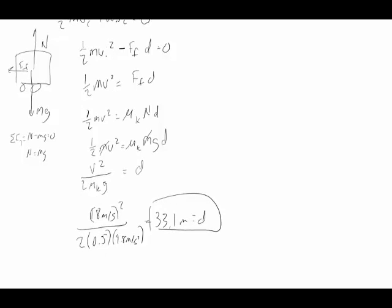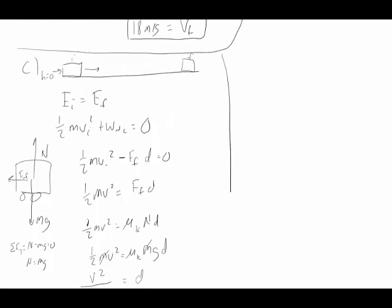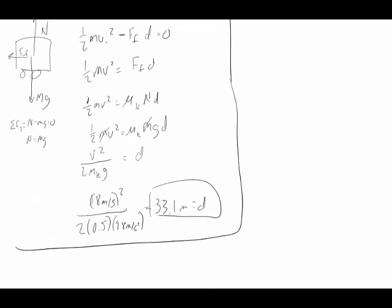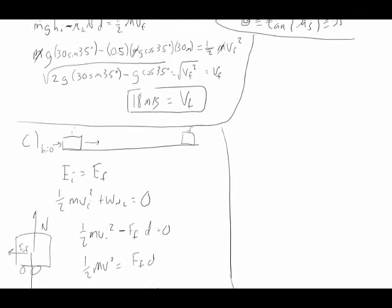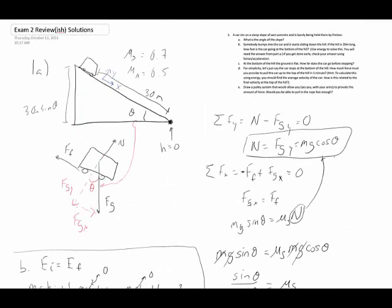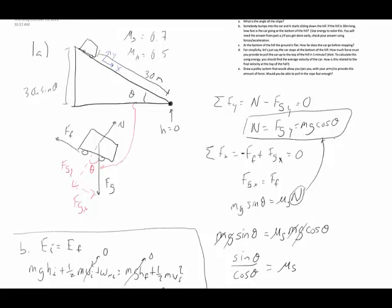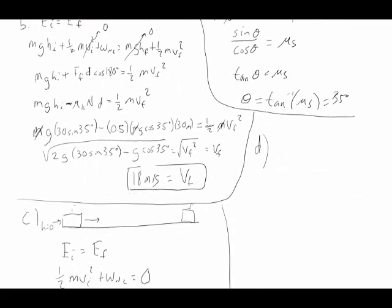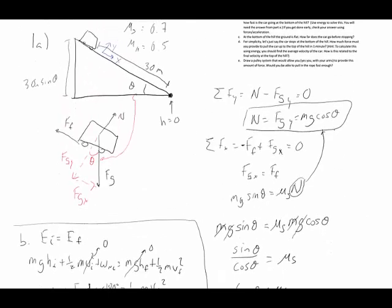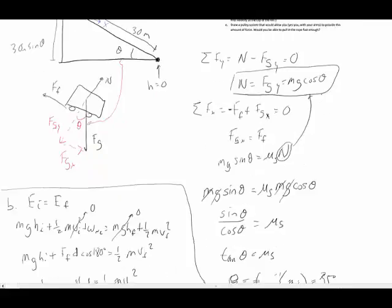The physics should all be correct even if the numbers aren't. Now for part D: the car is at the bottom of the hill, and we need to find how much force is needed to pull the car up to the top of the hill in one minute. The hint is that you have to find the average velocity.